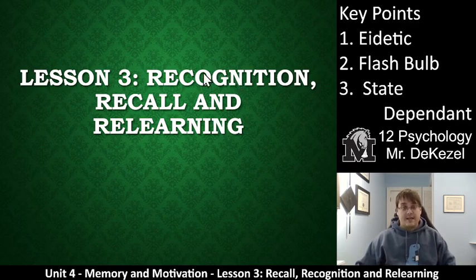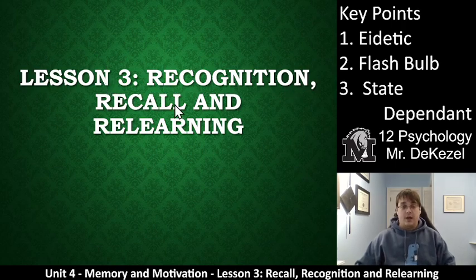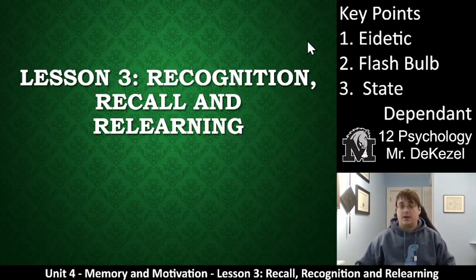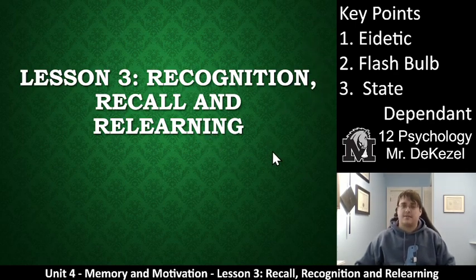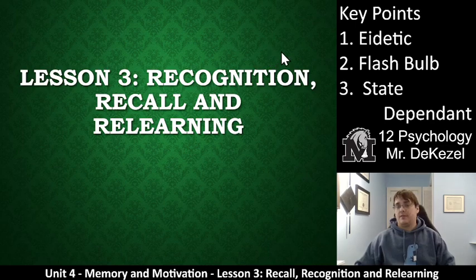Hello, grade 12 psychology class. Welcome back to another lecture. We have lesson three: recognition, recall, and relearning. The key points are eidetic, flashbulb, and state-dependent — these are titles on additional slides. So there are kind of six key points in total: these three, and then those three under the key points.